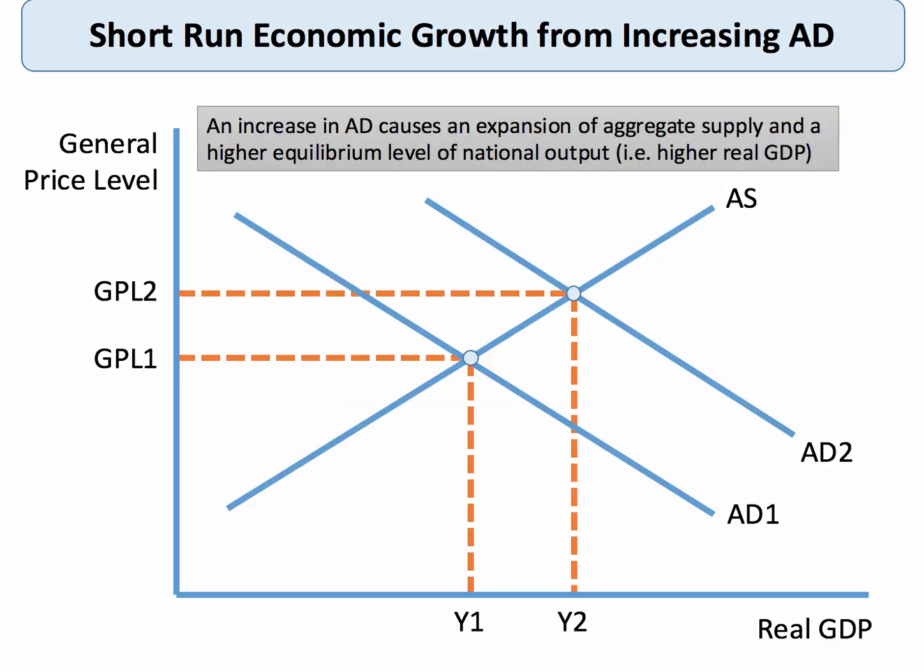One way we can look at the short-term analysis is by using ADAS. In my diagram here, I've just shown an increase or an outward shift in aggregate demand — for example, brought about by a rise in exports — and that would be a short-term fillip to the rate of growth of GDP.